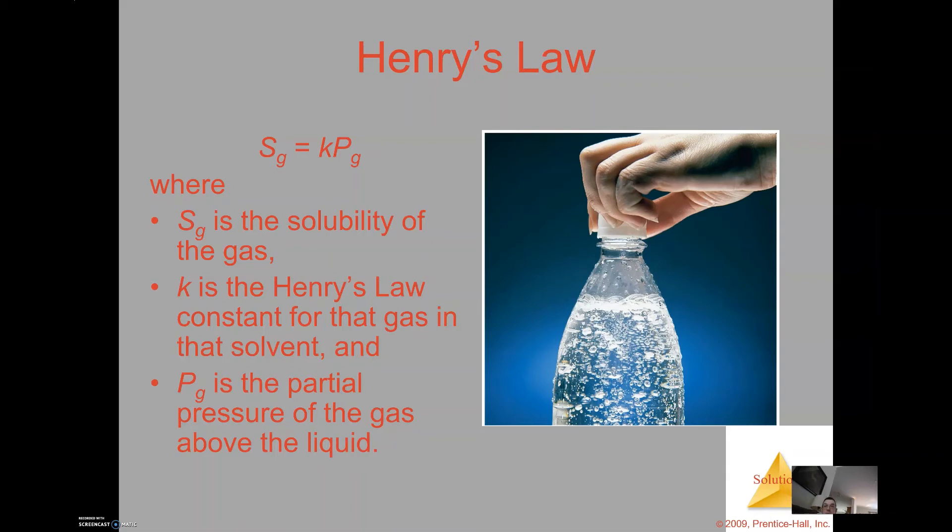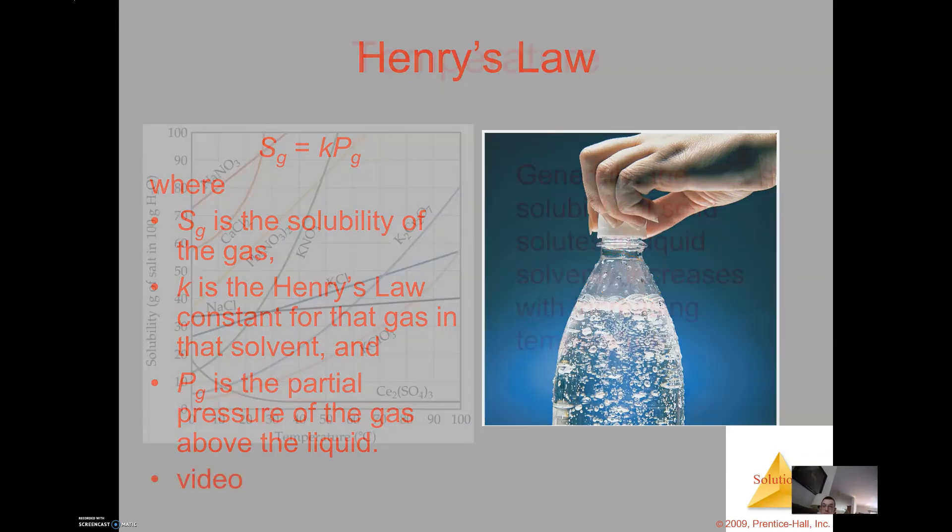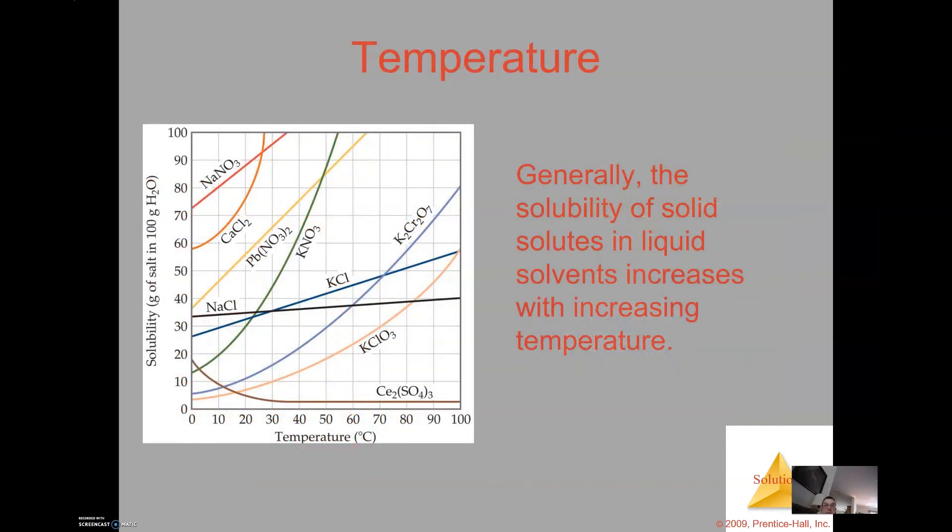So Henry's Law describes the solubility of the gas based off Henry's Law's constant and the pressure that's above the surface of the liquid, and in this case here this would be the area that would represent the partial pressure of that gas above the liquid. So now temperature plays a critical role. We talked about factors that affect solubility - we've looked at structure as one, pressure is another, and the third one is temperature.